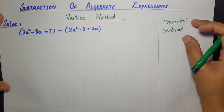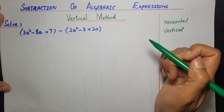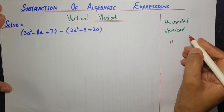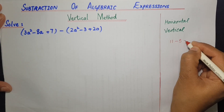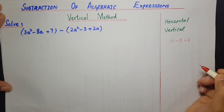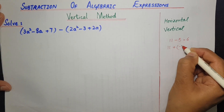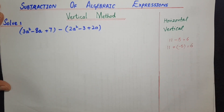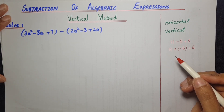یہاں پہ بھی دو method ہوتے ہیں: horizontal method اور vertical method۔ آج ہم vertical method کی مدد سے subtraction سیکھیں گے۔ subtraction میں ہم کیا کرتے ہیں؟ 11 minus 5 that is equal to 6 — اس کو ہم لکھ سکتے ہیں 11 plus minus 5 is equal to 6۔ subtraction میں first number کو second number کے additive inverse سے plus کر دیتے ہیں۔